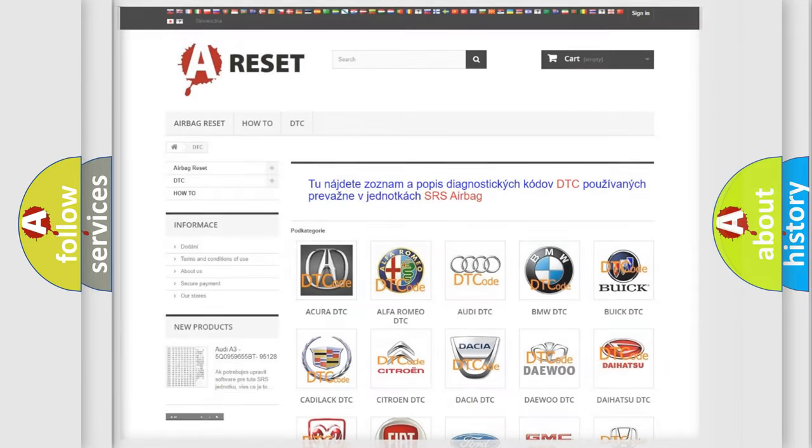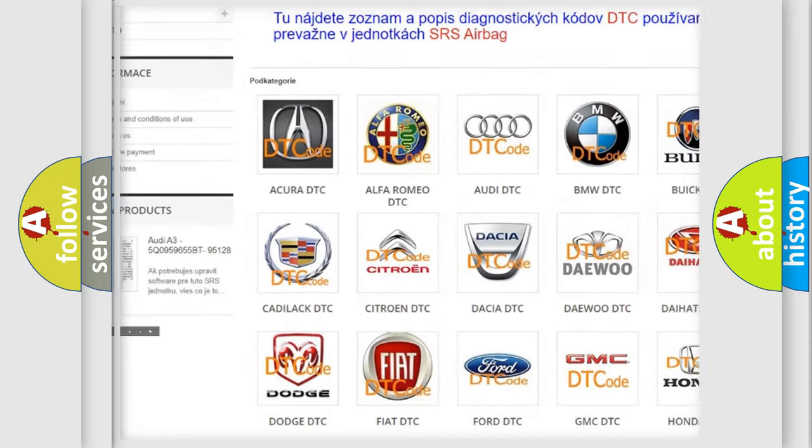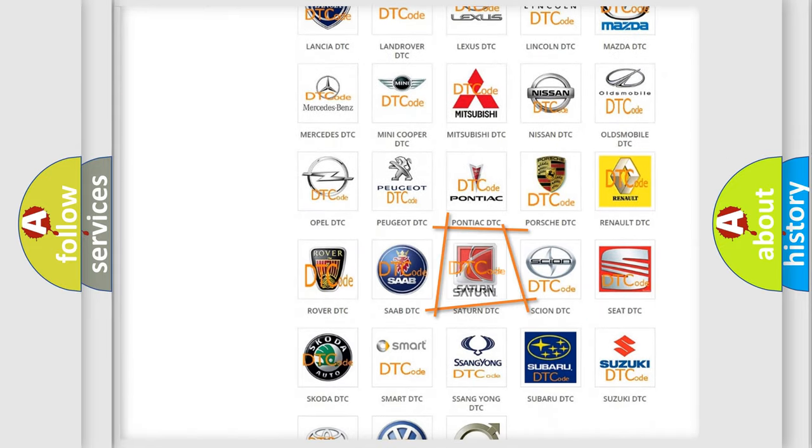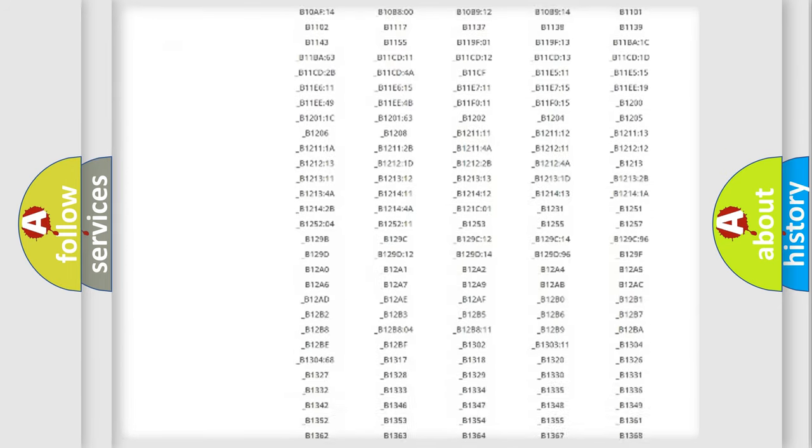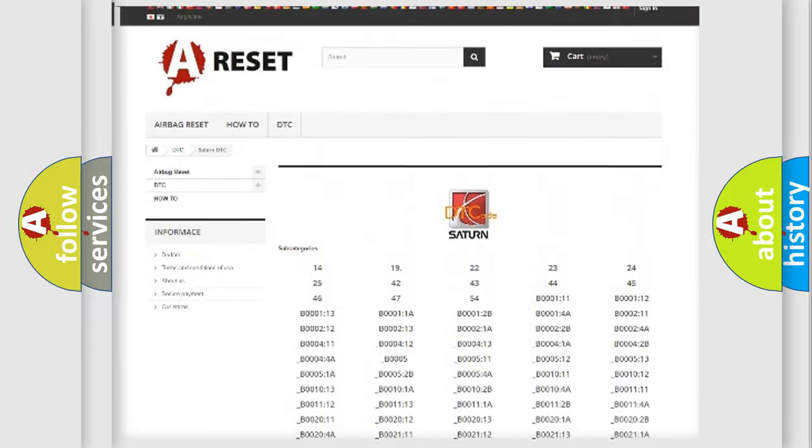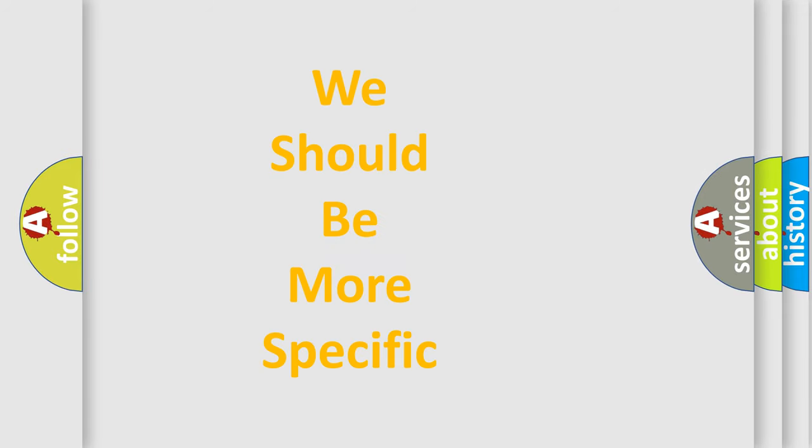Our website airbagreset.sk produces useful videos for you. You do not have to go through the OBD2 protocol anymore to know how to troubleshoot any car breakdown. You will find all the diagnostic codes that can be diagnosed in Saturn vehicles, and many other useful things. The following demonstration will help you look into the world of software for car control units.